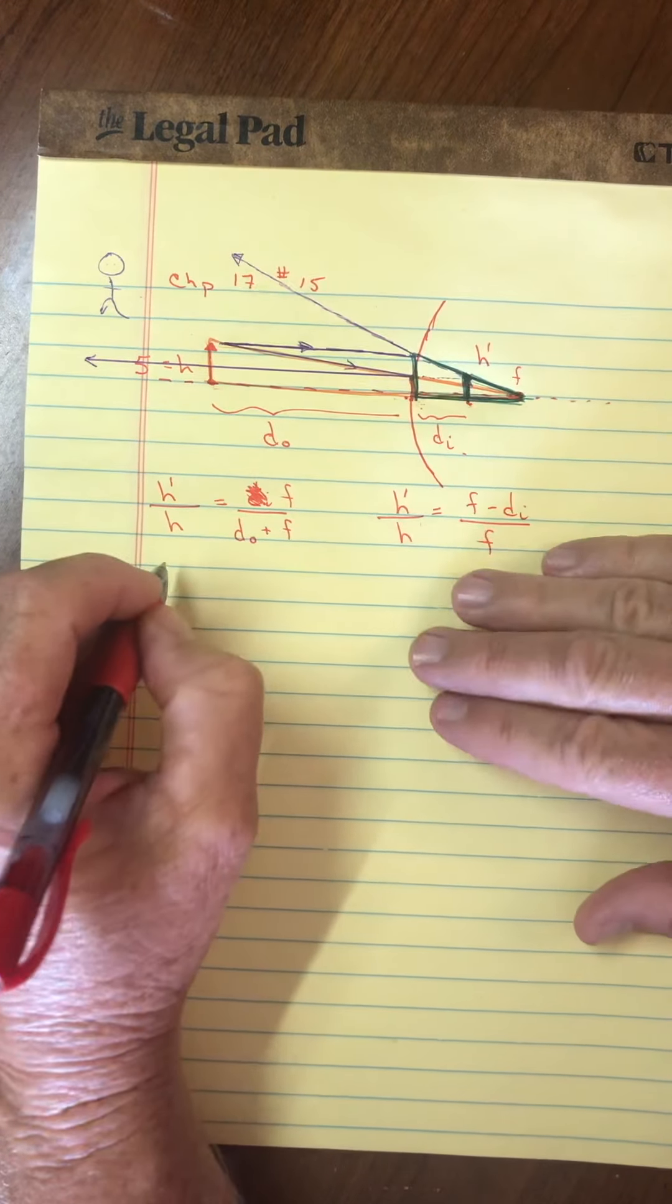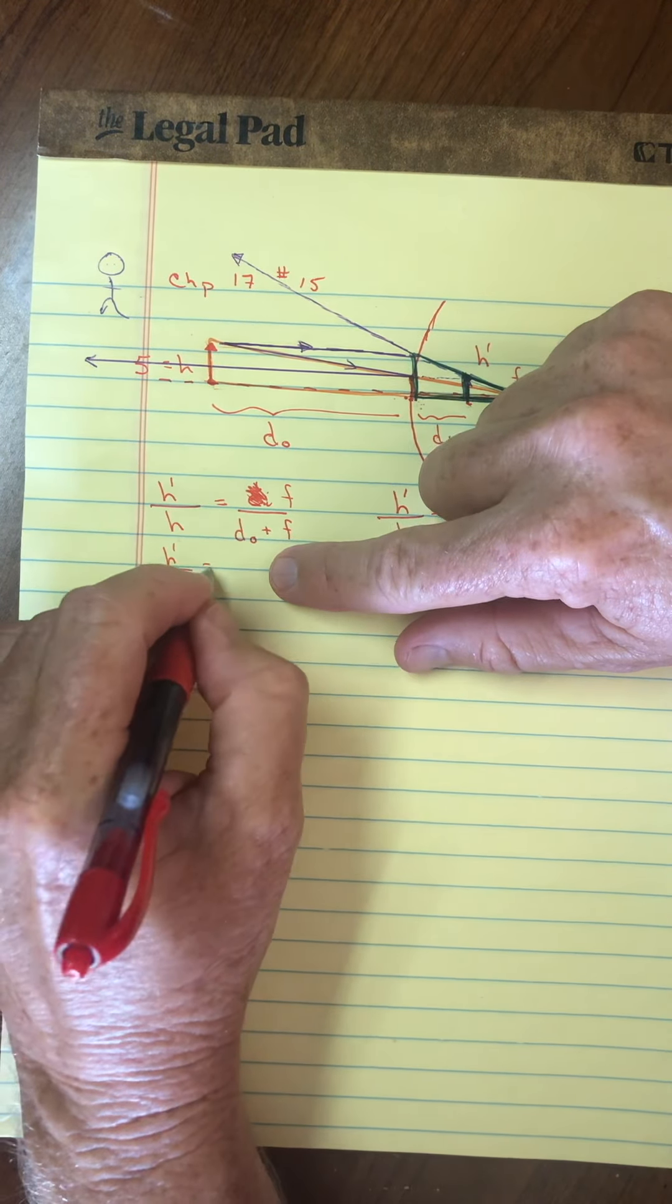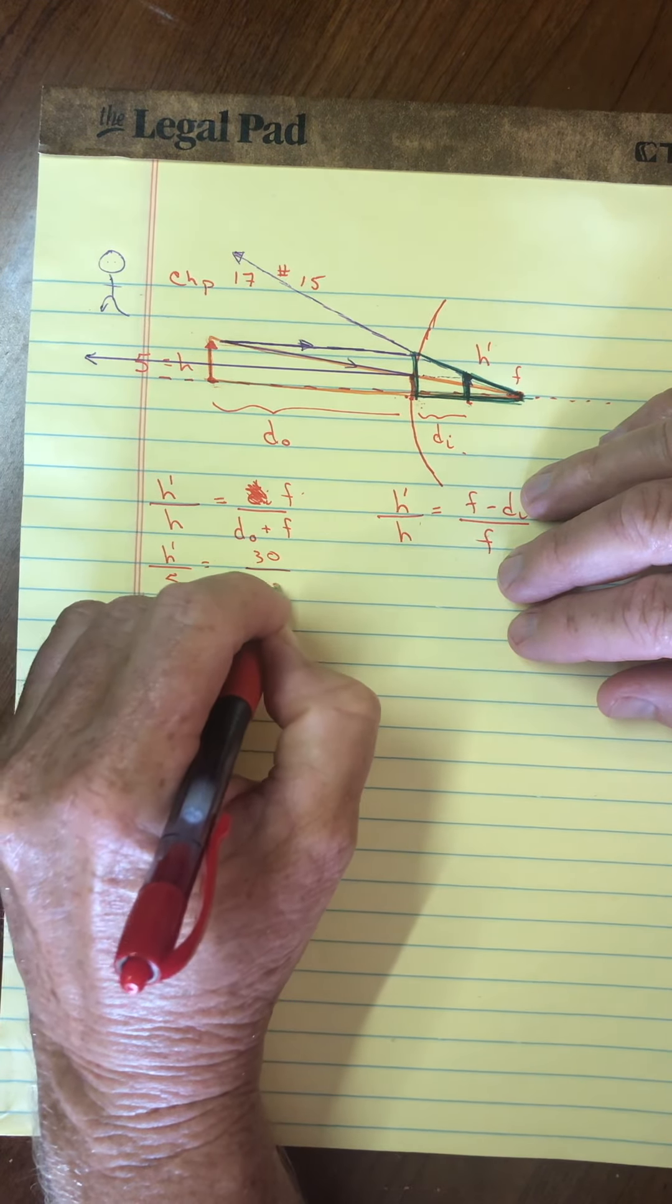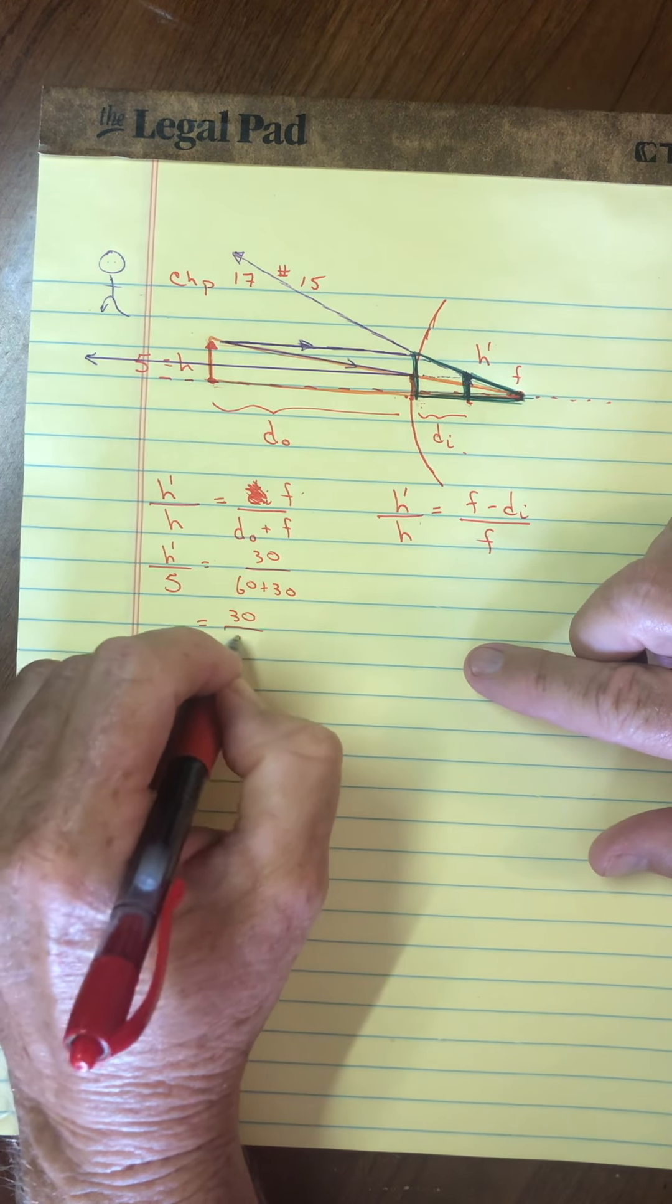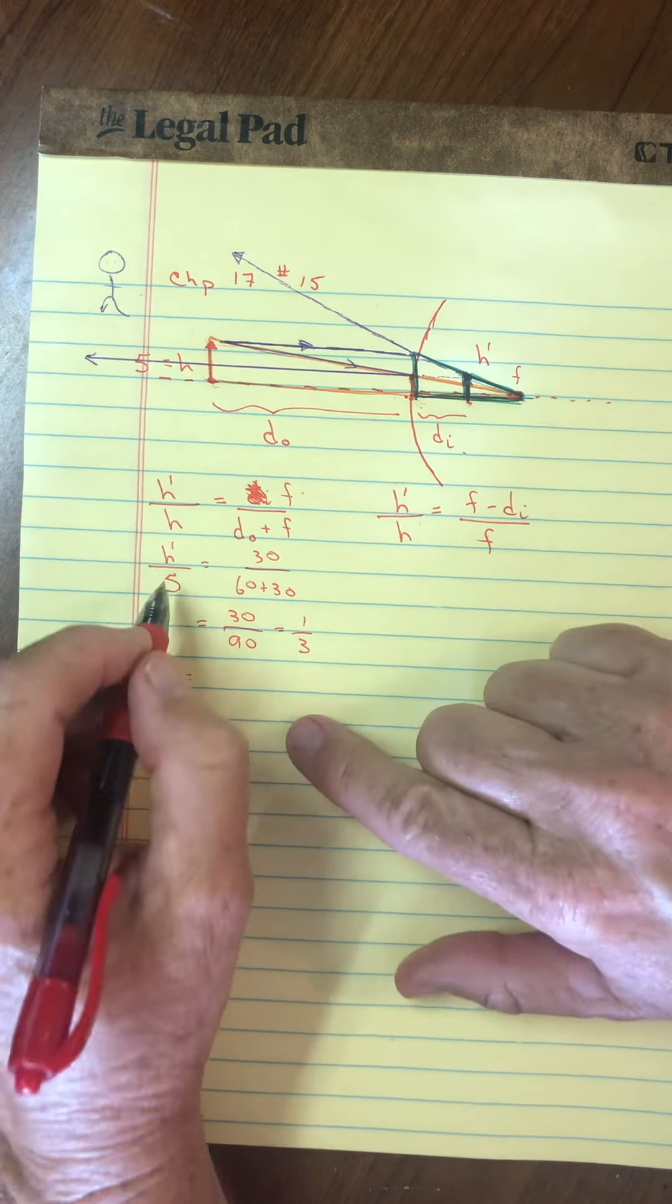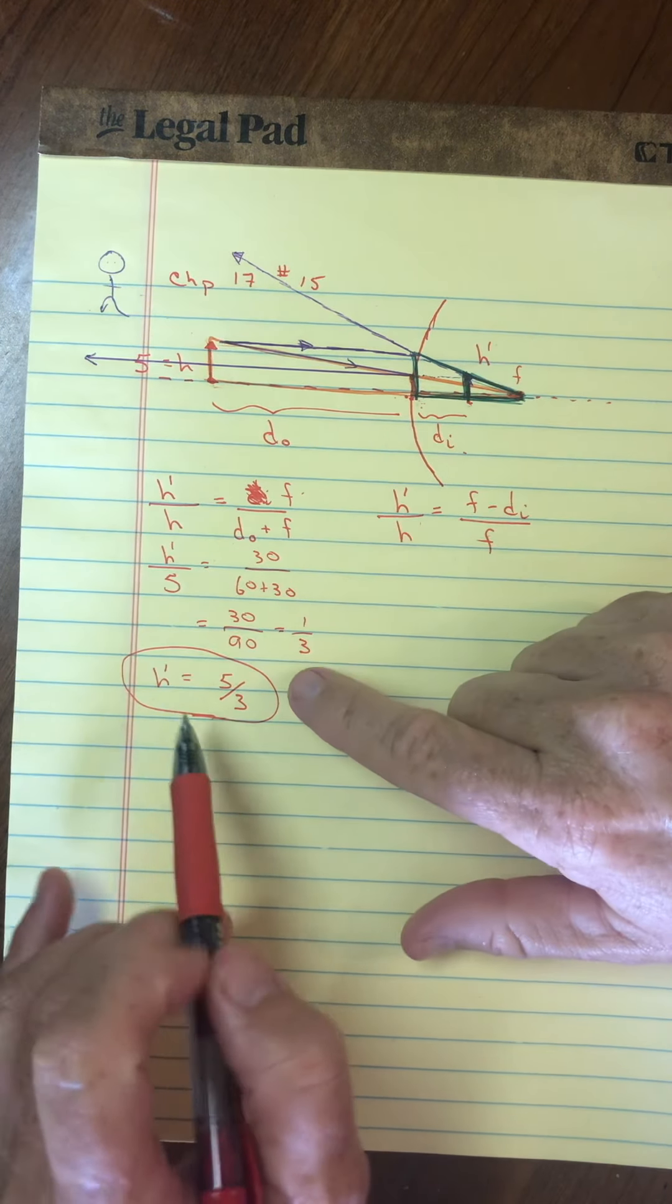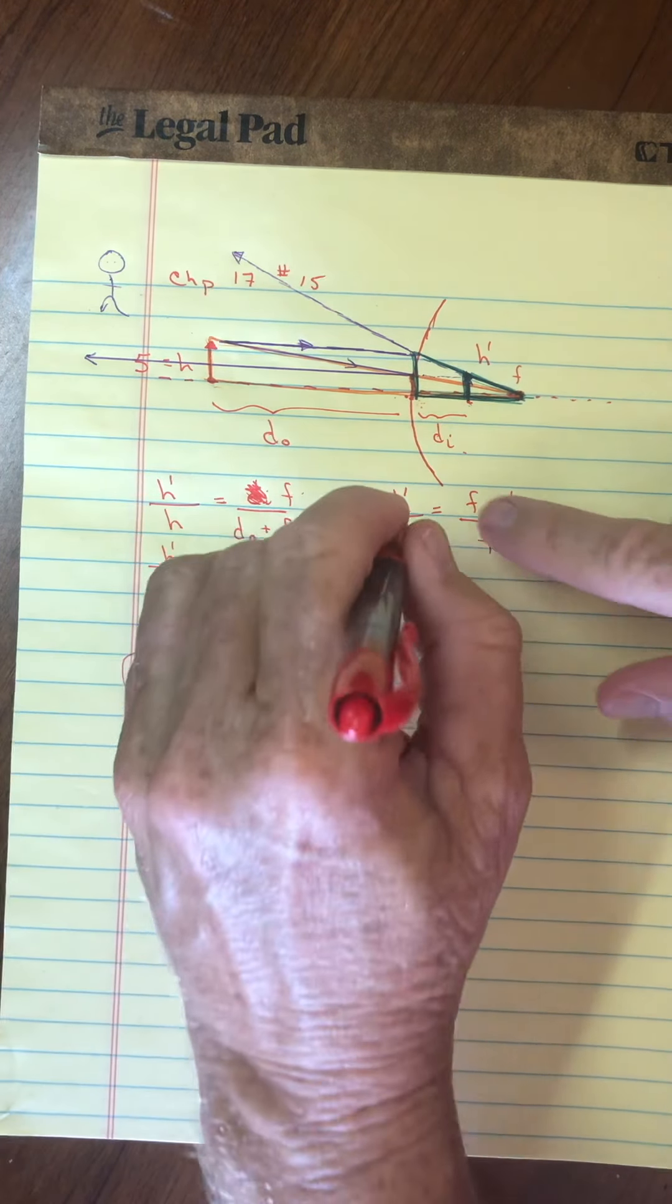So I'll put in what I do know. Height of the image, I don't know. Height of the object is five. Focal length is 30. And object distance is 60. So 60 plus 30. And so this by itself looks like 30 over 90, which is one-third. And so height of the image, if I bring the five over, is five-thirds. Okay. So they didn't explicitly ask for the height of the image, but that is an important first step.